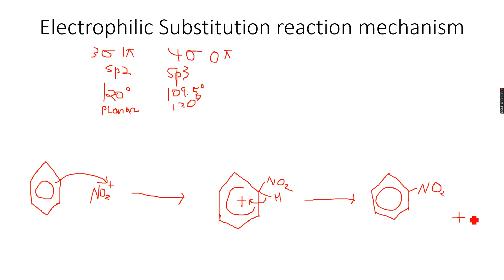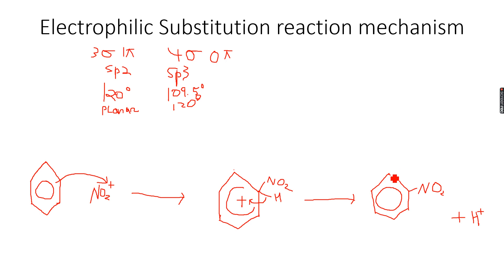We also get H+ ions released as we attach NO2. So this is nitrobenzene, as I showed you when I was giving examples of common aryl compounds. This is the electrophilic substitution mechanism — it is very easy. Just remember the curly arrows and you'll be good to go. Now let's move further.